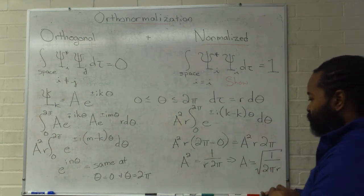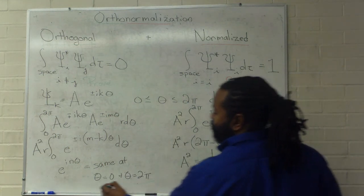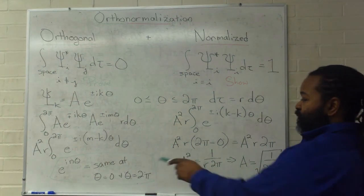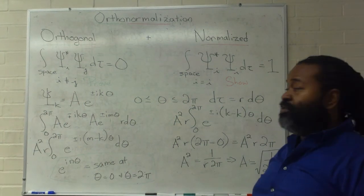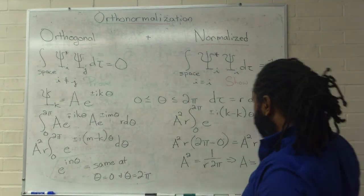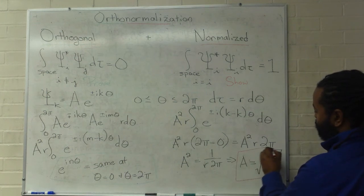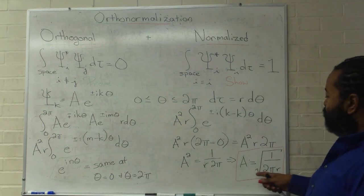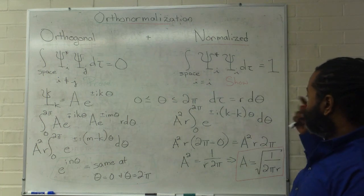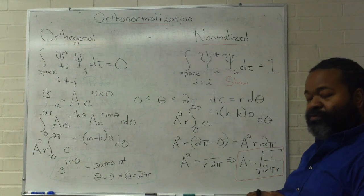So, as a result, the answer from the calculus over here is enough to prove that the entire integral is going to be 0 when the indices are different. That gives us orthogonality, and this value of a is enough to show that this integral will result in a value of 1, which is what we need for normalization.